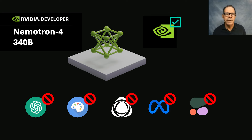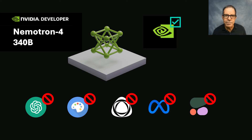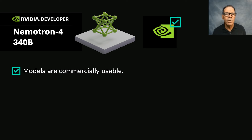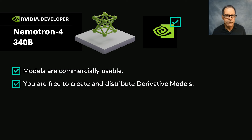And that's why this announcement is a big deal. The NVIDIA Open Model License lets us create synthetic data at scale for free, and use that data to build a model that we charge others to use. Here's the key language: models are commercially usable, you are free to create and distribute derivative models, and NVIDIA does not claim ownership to any outputs generated using the models or derivative models.